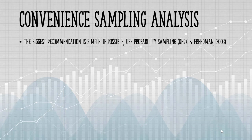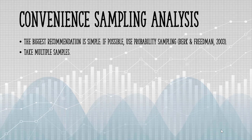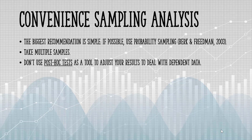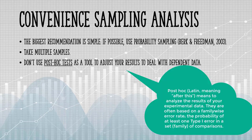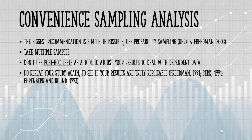The biggest recommendation is simple: if possible, use probability sampling instead. Other recommendations: take multiple samples over the course of your study. If you do this, you may be able to model the selection process, producing more reliable results. Don't use post-hoc tests as a tool to adjust your results in an attempt to deal with dependent data. You can repeat your study again to see if your results are truly replicable.